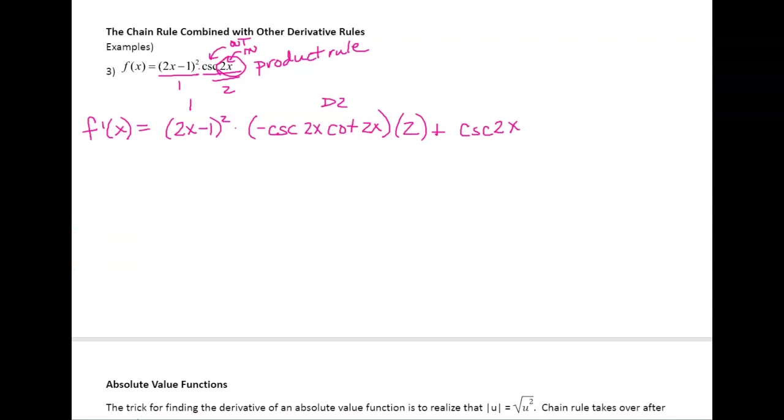Now d1 is another chain rule. We've got an inside and an outside. The outside is a power rule, so that's how you're going to start. You're going to bring the two down. Its inside stays the same. Subtract one. Then we take the derivative of that inside. Really wide. With the product rule, you typically want to do common factoring. So we can take out a 2. Take out one of the 2x minus ones. Take out a cosecant 2x. And that's it.